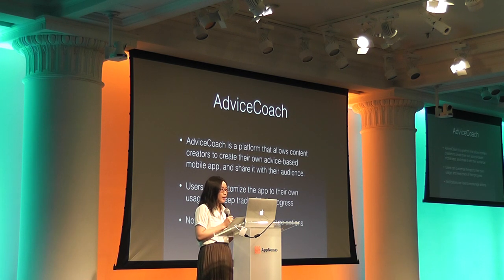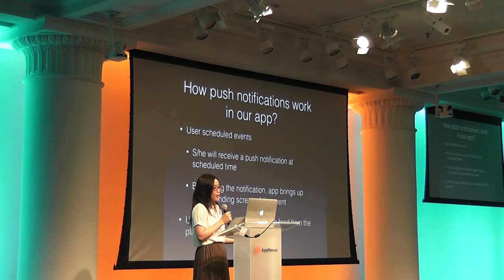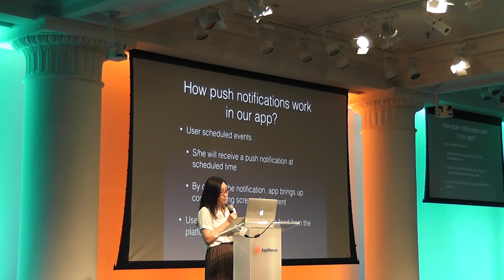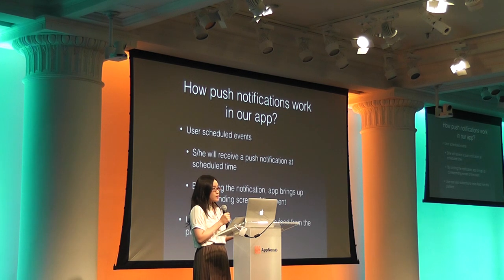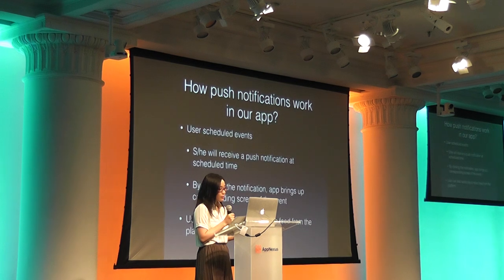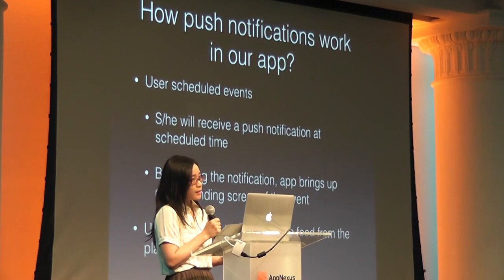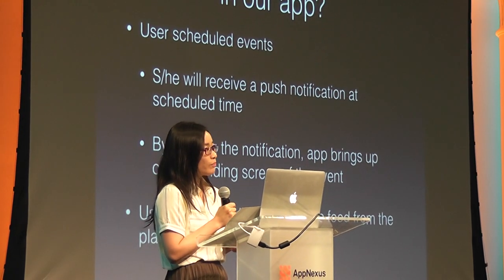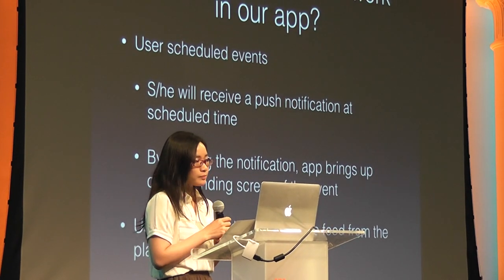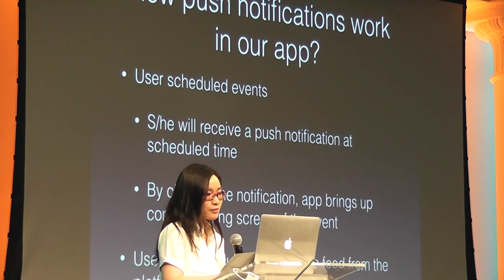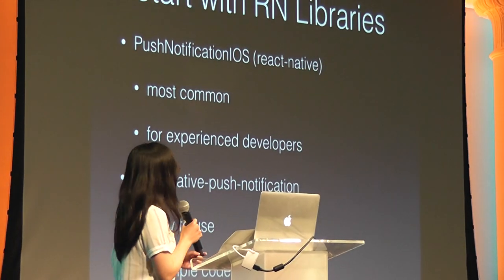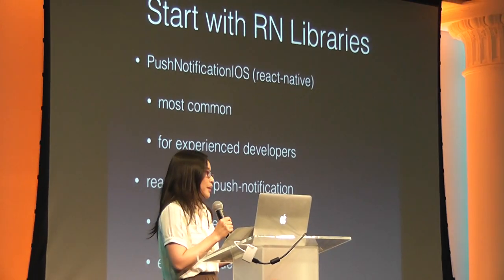We use notifications to keep users motivated and encouraged. So how do push notifications work in our app? We allow users to schedule events so they will receive a push notification at the scheduled time. By clicking the notification, the app brings up the corresponding screen of the event, using data included in the notification payload itself. Another use case is users can subscribe to a news feed that publishers push on our platform, more like a content feed concept.